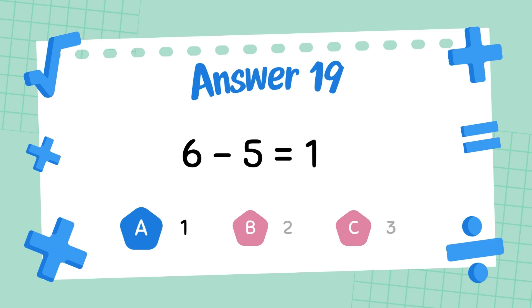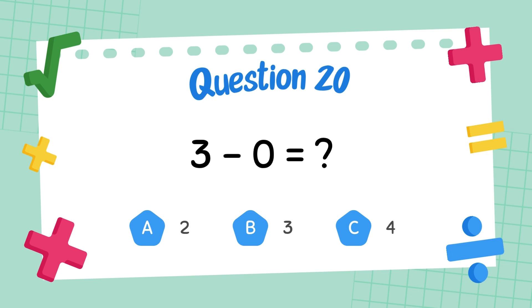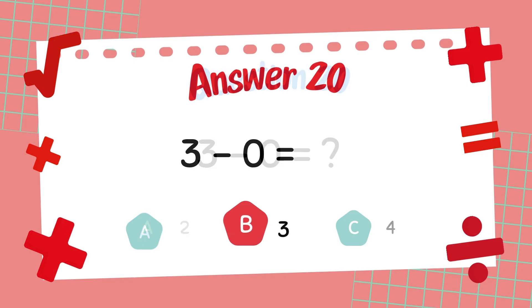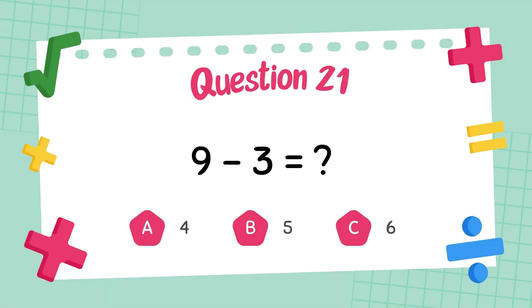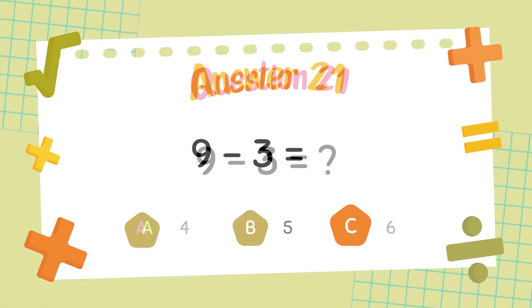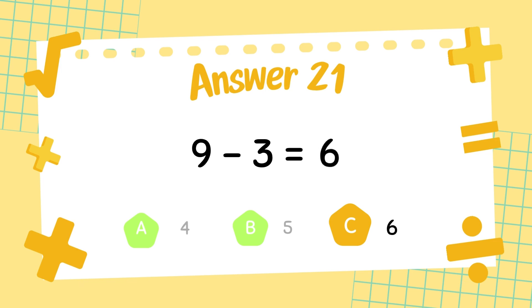The answer is 5. What is 9 minus 3? The answer is 6.